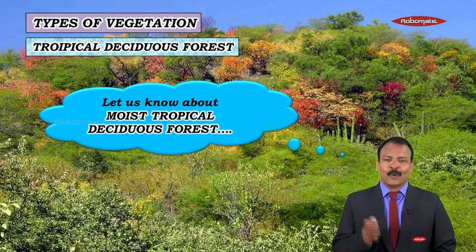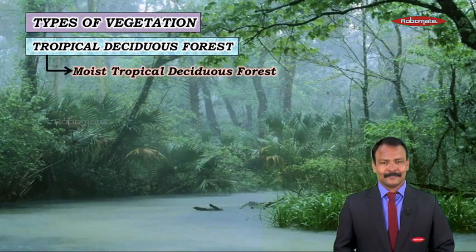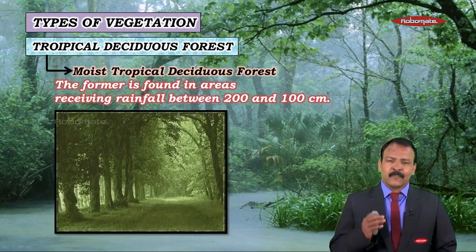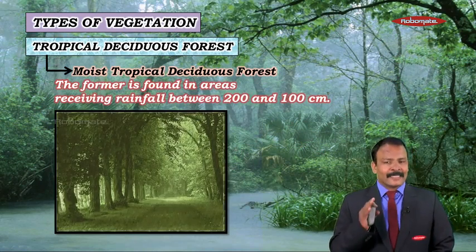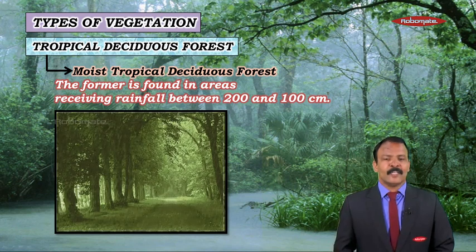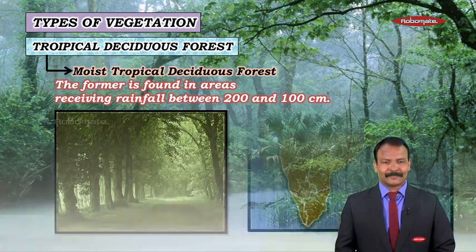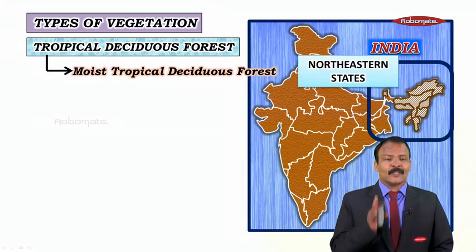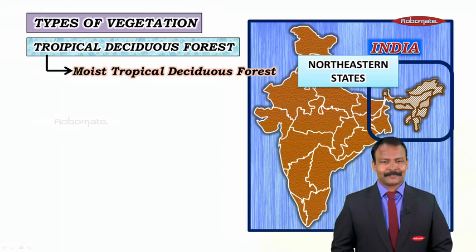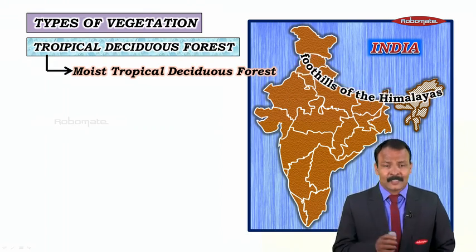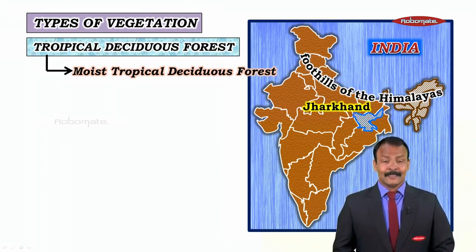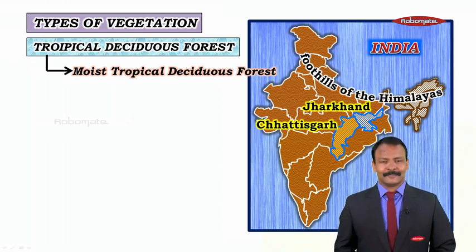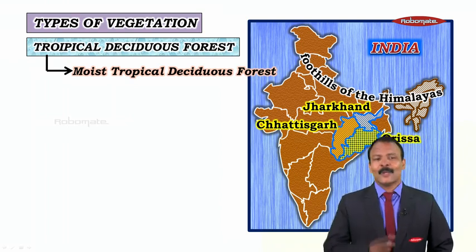Coming to moist tropical deciduous forests, they are found in areas receiving rainfall between 100 and 200 centimetres. These forests are found in the northeastern states, the foothills of the Himalayas, and the states of Jharkhand, Chhattisgarh, and Odisha.